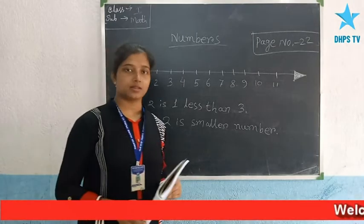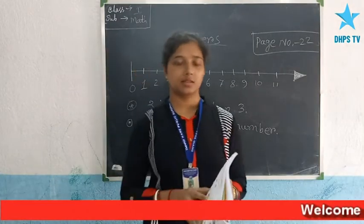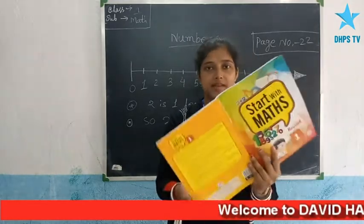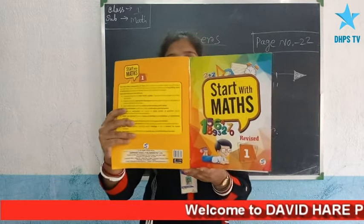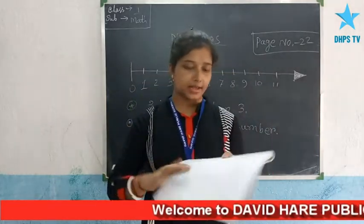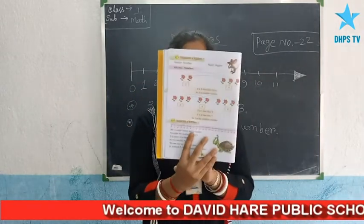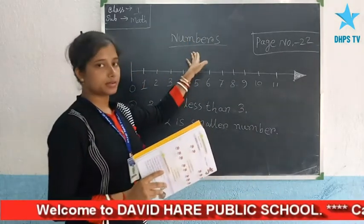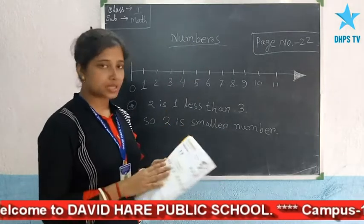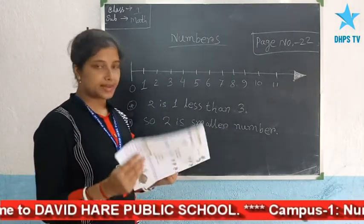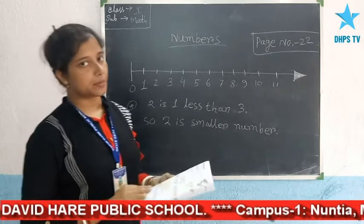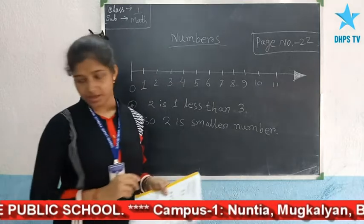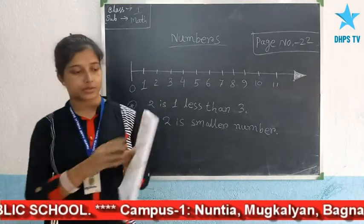Welcome students to our online class. Students of Class 1, please open your map book and start with maths. Page number is 22. The chapter is Numbers. In your previous class, you have learnt about average numbers, numbers clearly, and before number, after number, and middle numbers. And today, a new topic will start.